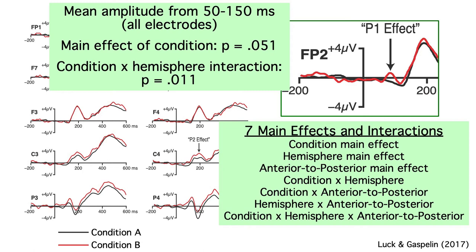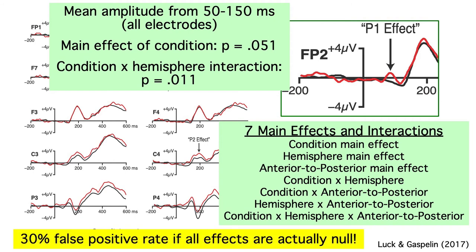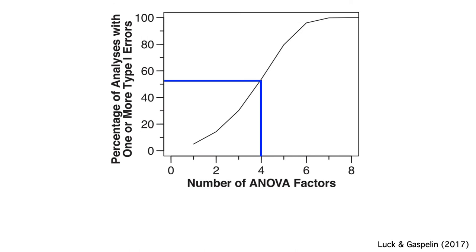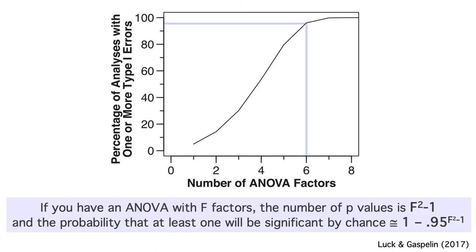If you have one p-value and the null hypothesis is true, you'll have a 5% chance of a significant effect. But if you have seven p-values and the null hypothesis is true for all seven of them, you have about a 30% chance that at least one will be significant — a 30% false positive rate instead of the expected 5%. If you have a four-way ANOVA, you have over a 50% chance of a bogus but significant effect, and if you have a six-way ANOVA, the odds go up to over 95%. The math is included here as a close approximation.